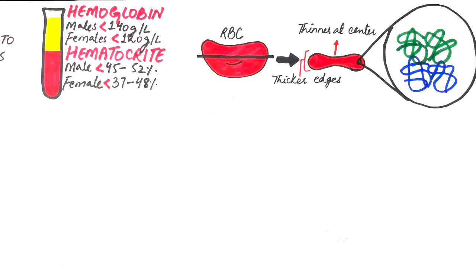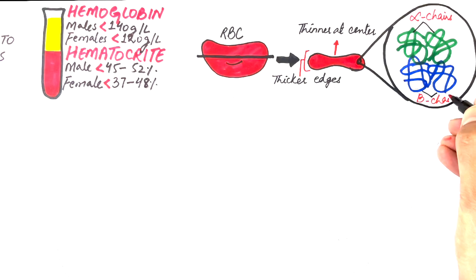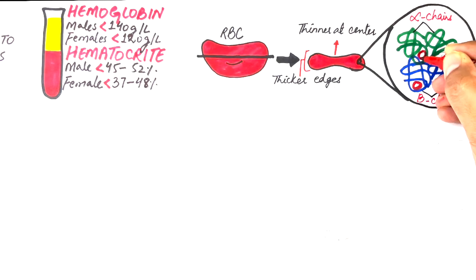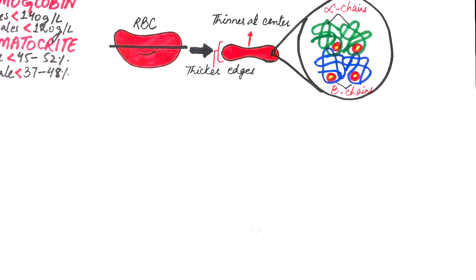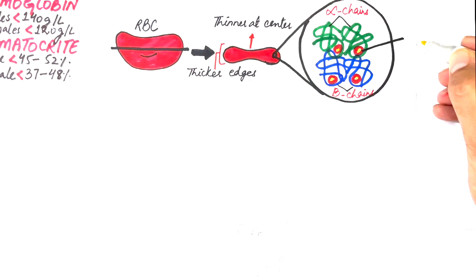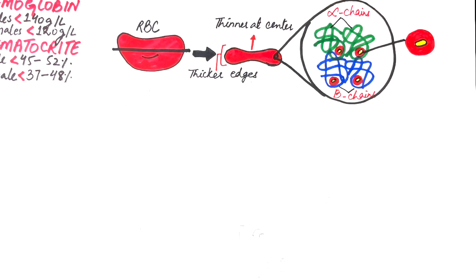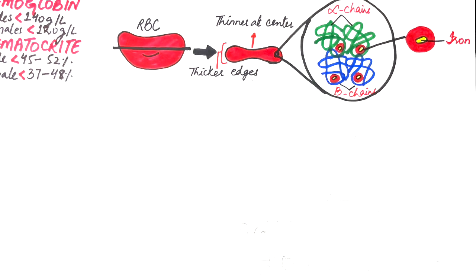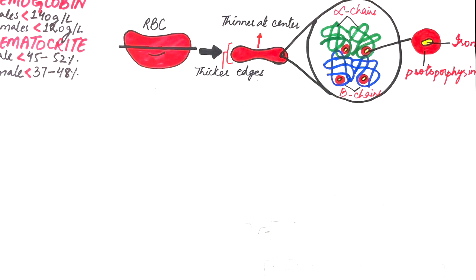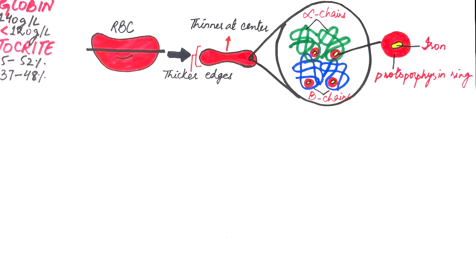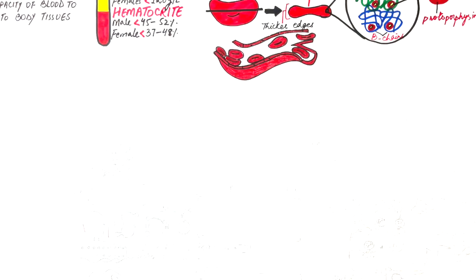In adult hemoglobin, or HbA, which is the major type of hemoglobin in individuals, the peptide chains are the true alpha and the true beta chains. Each of these chains is bound to a heme group. The heme group is further composed of iron and a protoporphyrin ring. Each hemoglobin molecule can carry four oxygen ions. A deficiency in red blood cell count, or a deficiency or impairment in the hemoglobin molecule, can cause anemia.